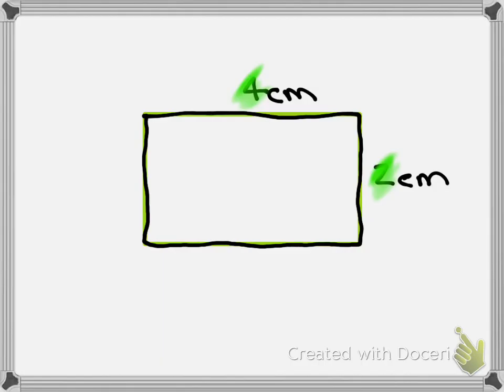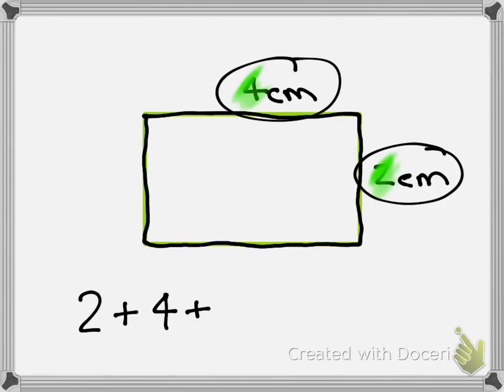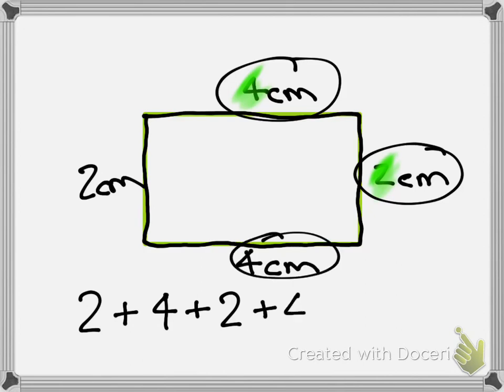Now in my rectangle, I have 2cm, add 4cm. This side must be 2cm as well. And then this side must be 4cm as well. So if I add all of those together, 2 add 2 makes 4, add 4 makes 8, add 4 again makes 12. So the perimeter of this rectangle is 12.